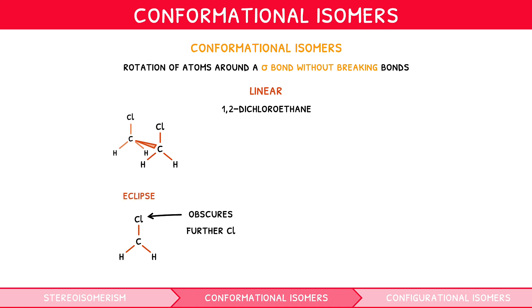If we then rotated the further carbon's groups by 180 degrees, then looked from head-on, both chlorine atoms would be visible — antiverted. Hence, we call this an anti-isomer.